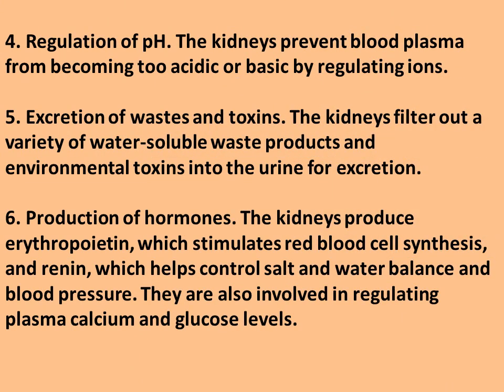Number four, the kidneys prevent blood plasma from becoming too acidic or basic by regulating ions. Number five, excretion of wastes and toxins — the kidneys filter out a variety of water-soluble waste products and environmental toxins into the urine for excretion. Number six, production of hormones — the kidneys produce erythropoietin, which stimulates red blood cell synthesis, and renin, which helps control salt and water balance and blood pressure. The kidneys are also involved in regulating plasma calcium and glucose levels.